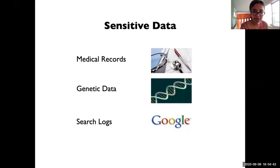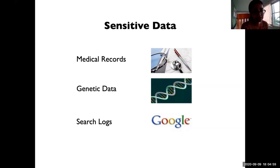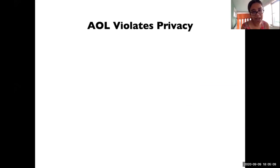As you know, a lot of data that AI systems or machine learning algorithms these days deal with is sensitive data — examples being medical records, genetic data, and people's behavioral data like search logs. If you're not careful in dealing with this data, there can be really bad consequences.